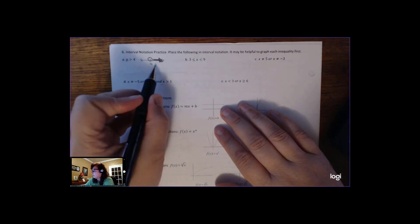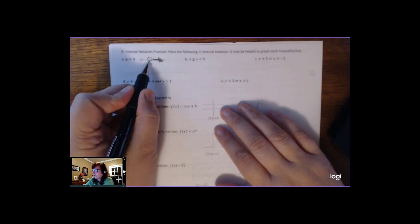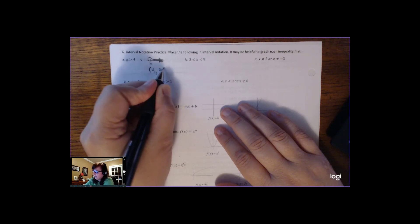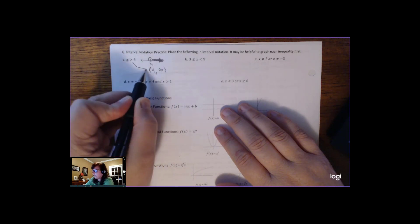And interval notation is really supposed to mimic a number line without having to draw a number line. So that open hole is going to show up as a parenthesis, and we're talking all the numbers from 4 to infinity, not including 4. So that's interval notation for x is greater than 4.